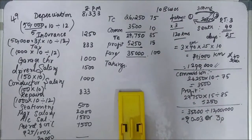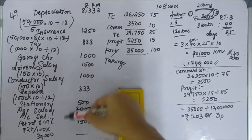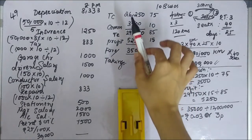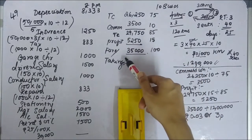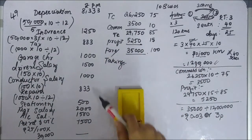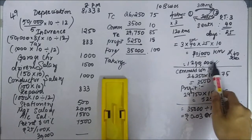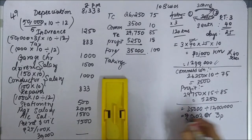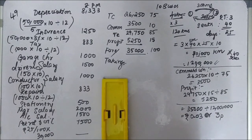That's it. Illustration 49 is complete. To summarize: from total cost, we added commission and profit to derive total fare (takings), and then divided by total passenger km to get the per passenger fare of 3 paise.